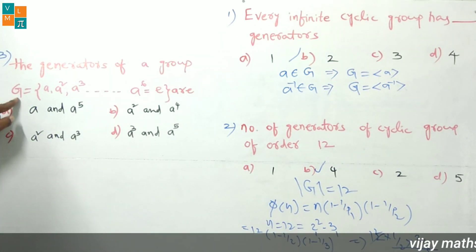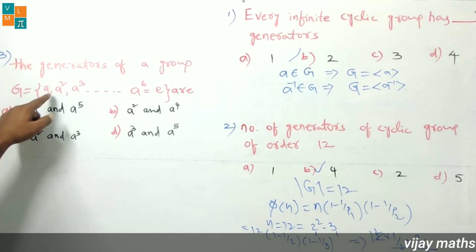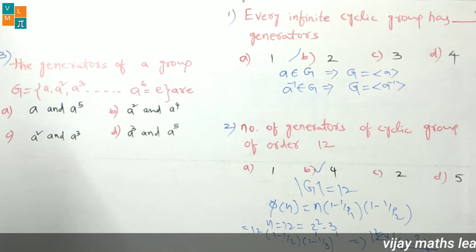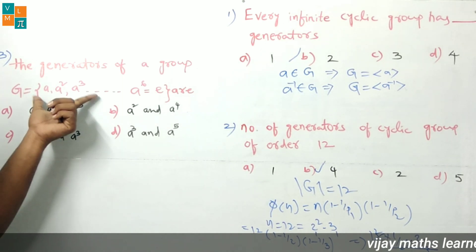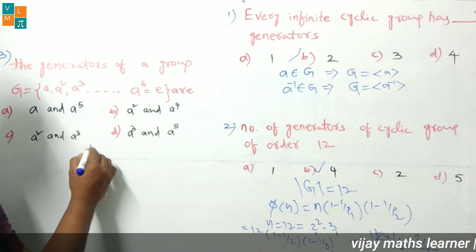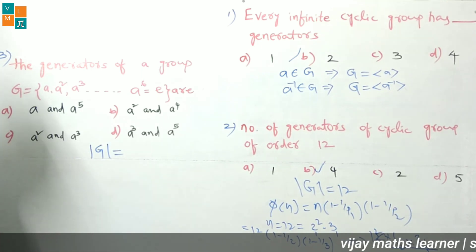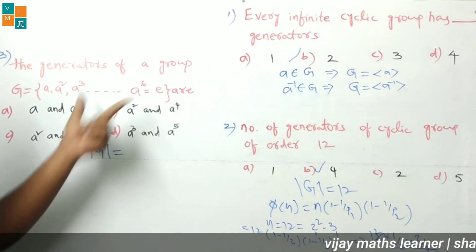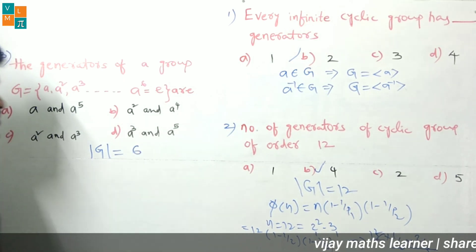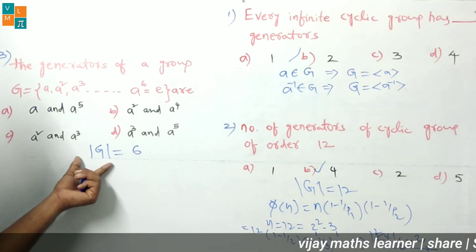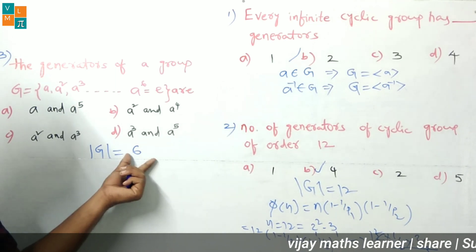The third question: find the generators of the group G = {a, a², a³, a⁴, a⁵, e} where a⁶ = e. Observe the order of the group — there are 6 elements, so the order of the group is 6. The generators are the elements less than 6 and relatively prime (co-prime) to 6.